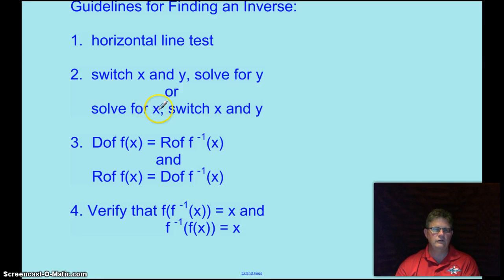first solve the equation for X then switch X and Y. Third guideline, the domain of F of X will be the range of F inverse of X and the range of F of X will be the domain of F inverse of X. And the last guideline, a function and its inverse composite function will yield X so you have to show both ways that they yield X. Now let's go ahead and look at a specific function and see if we can show that it has an inverse.